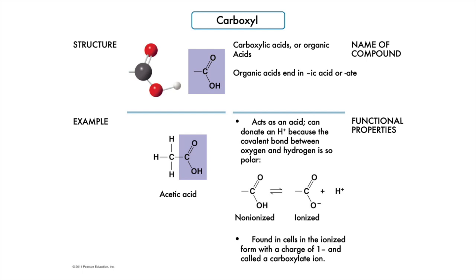The third functional group, before we leave oxygen behind for a bit, is the carboxyl functional group. These are polar. This functional group is called carboxylic acids, also known as organic acids. These molecules can be recognized because they usually end in 'ic acid' or '-ate.' While this molecule might look like the carbonyl and hydroxyl functional groups had a baby together, it behaves differently in that the proton on the second oxygen atom can be donated to solution, as acids usually do. You can find organic acids in the non-ionized form or the ionized form, once they have donated their proton. When ionized, they can form salts because they function as anions. This is a very common functional group in living tissue, as we will see in Chapter 5.